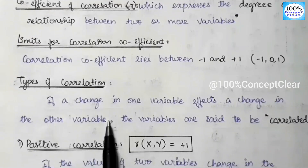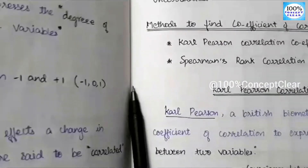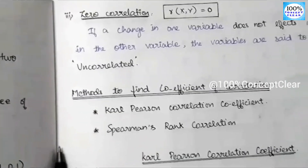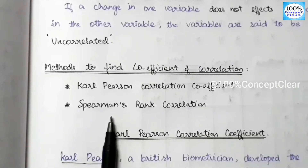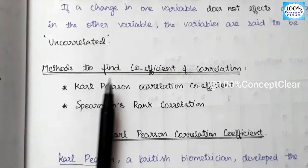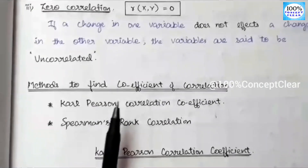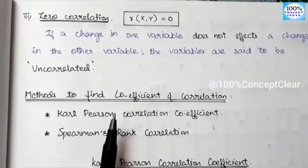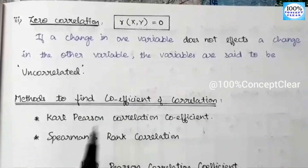The types of correlation are positive correlation, negative correlation, and zero correlation. We are also going to look at the methods of correlation. All of these form the introduction part, so if you want a basic idea of the correlation topic, you can refer to that video.